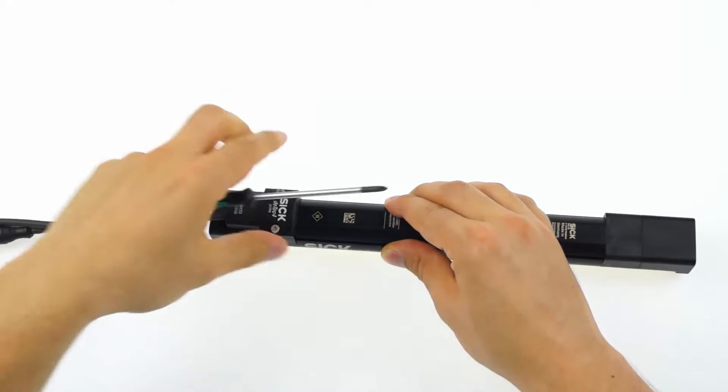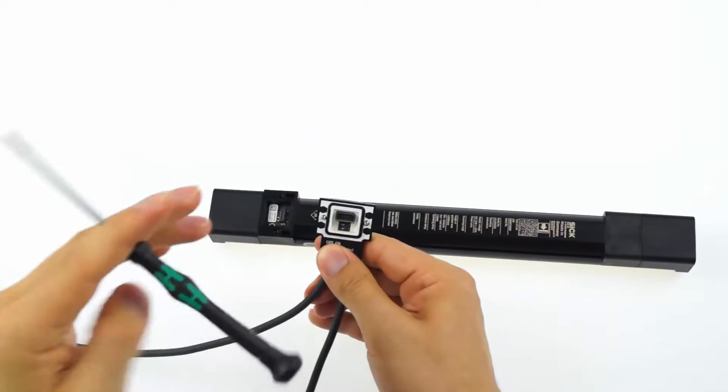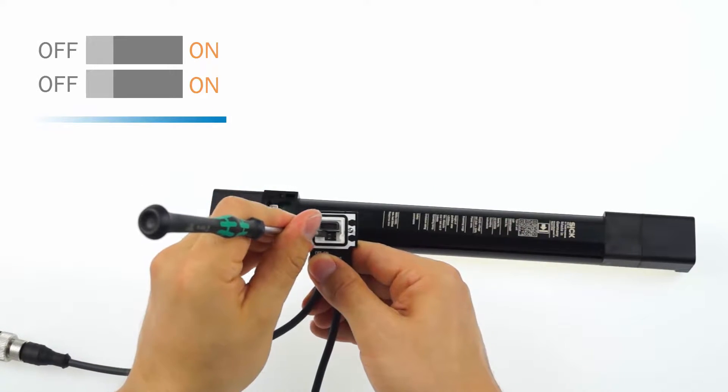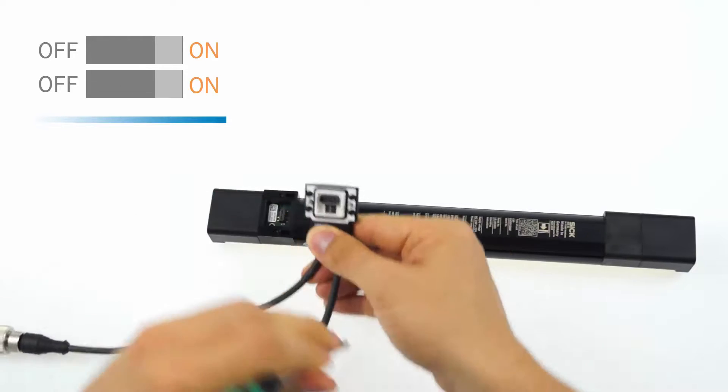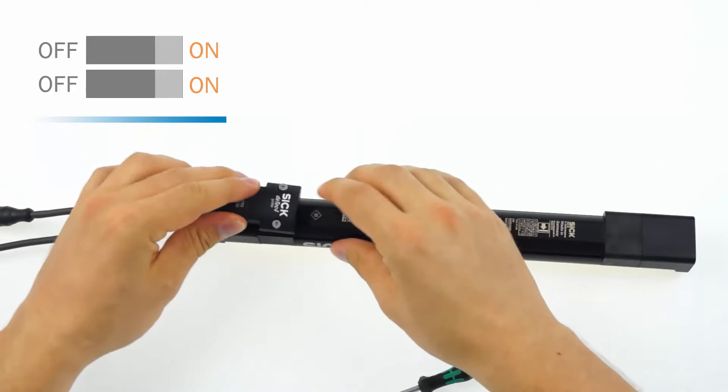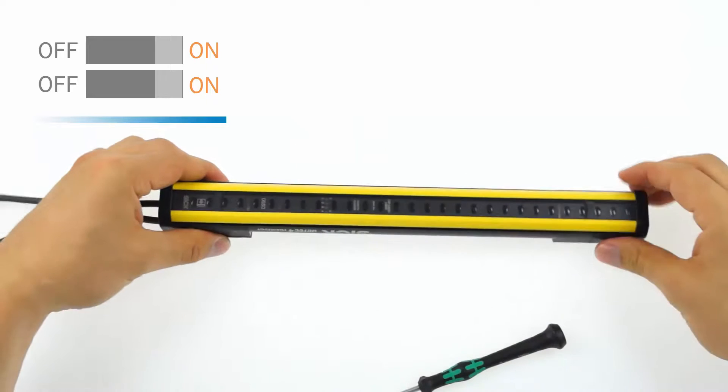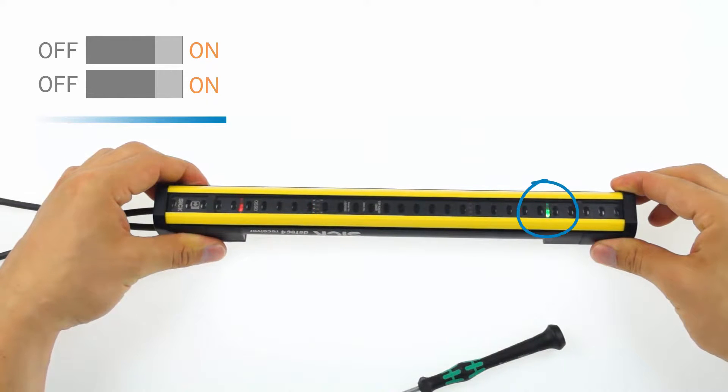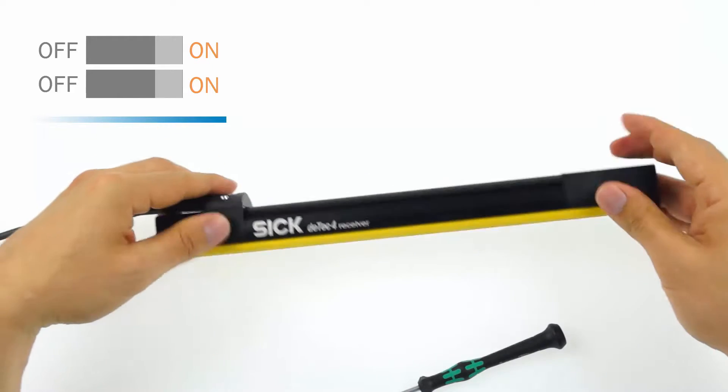In the first step, detach the system plug. Set both of the DIP switches to ON and put the plug back on the device. Switch on the power. The field LEDs are flashing green and yellow now. Disconnect the device from the power supply within 10 seconds.